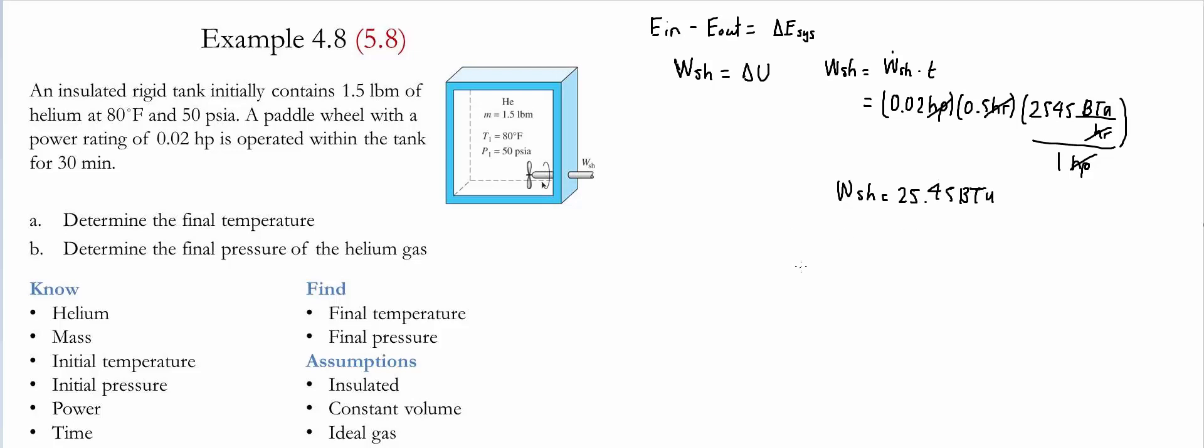Then now in order for us to be able to find the change of the energy, we are going to describe it using change of internal energy equals the mass times the specific heat at constant volume times the difference between temperatures. We are able to use this relationship since the material in this problem is helium and helium is treated as an ideal gas. In this case, what we are looking for is the final temperature. So we are going to equal these two quantities and solve for T2.